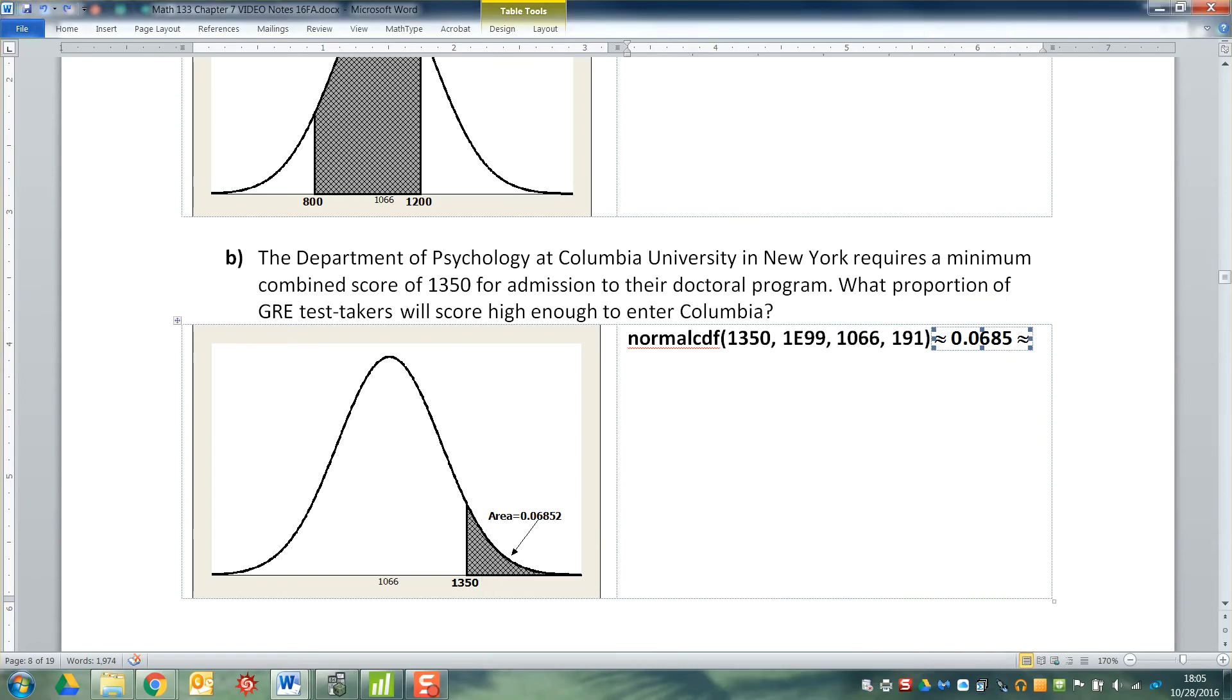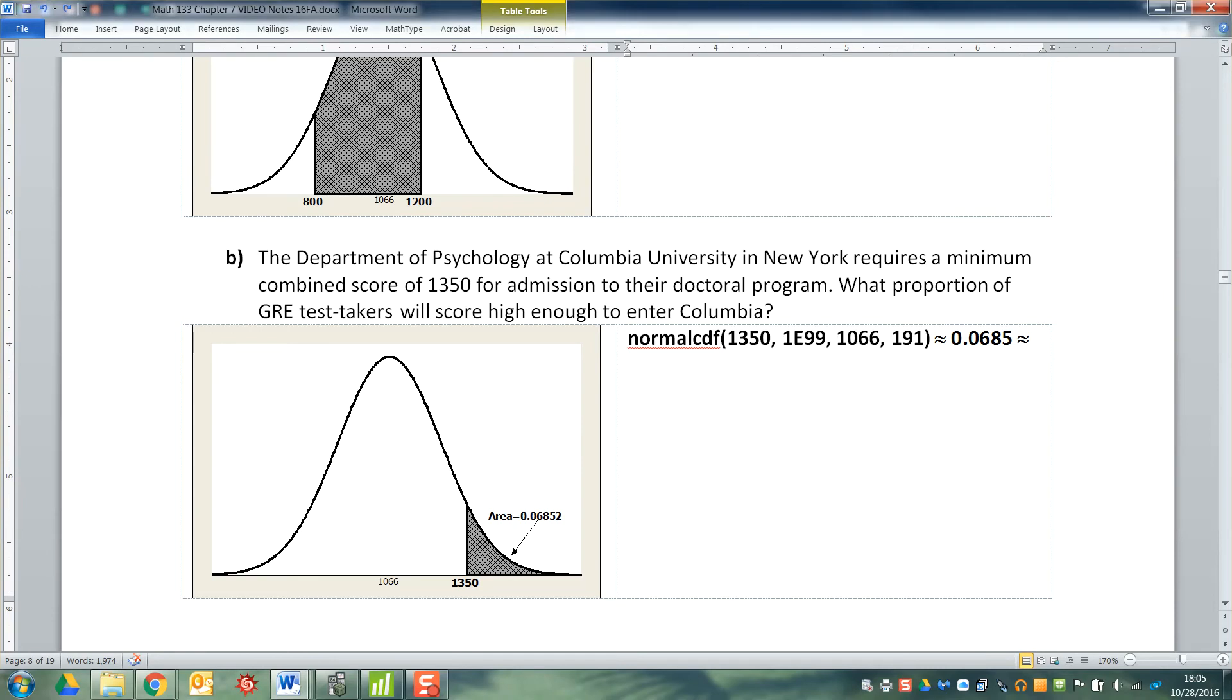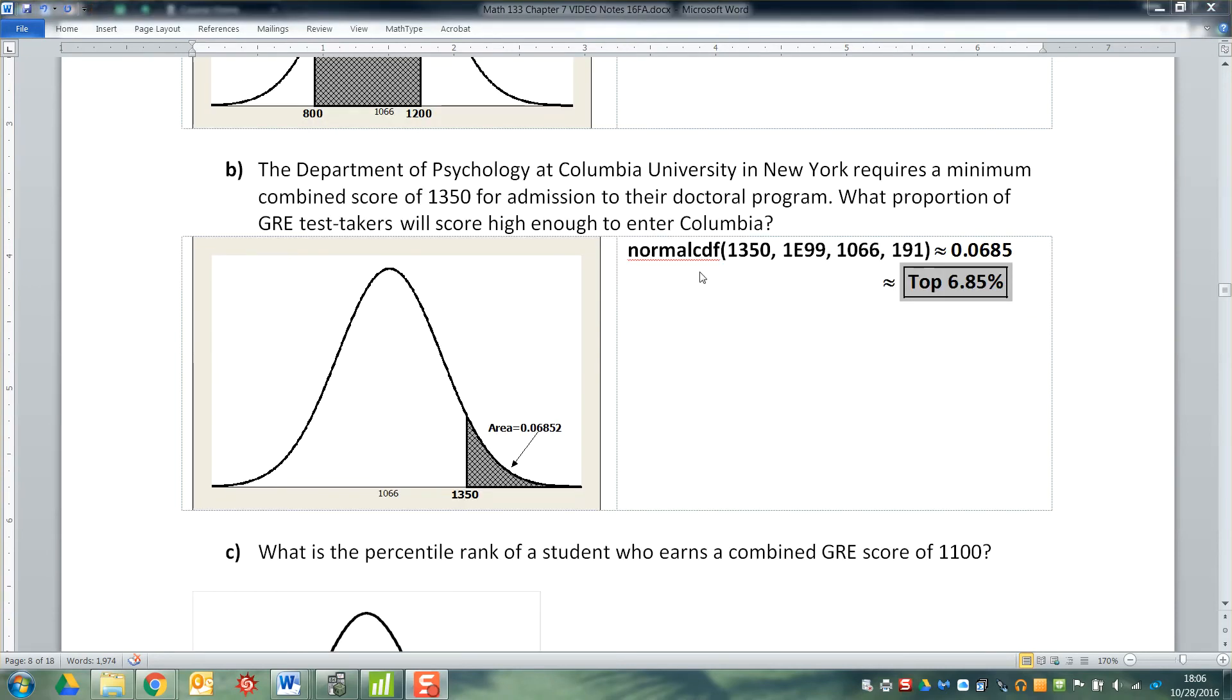See, I would not lie to you, which means Columbia is only interested in you if you score in the top 6.85% of all GRE test takers, which is really steep. They, like most highly-ranked schools, demand a lot of performance from their students.